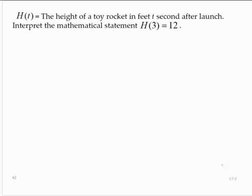H of t is the height of a toy rocket in feet t seconds after launch. Interpret the mathematical statement h of 3 equals 12. If we consider this notation h of t, notice that the 3 has taken the place of the t. So 3 must be the time in seconds.